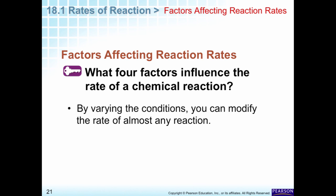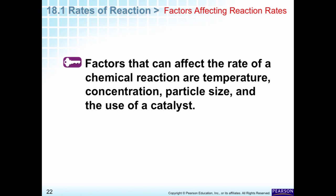Okay, now let's talk about something else. Let's talk about what can affect the reaction rate - how fast or slow something goes. We have four factors we're going to talk about, and by varying the conditions you can modify the rate of almost any reaction. This is something you should write down and definitely know: temperature, concentration, particle size, and the use of a catalyst.